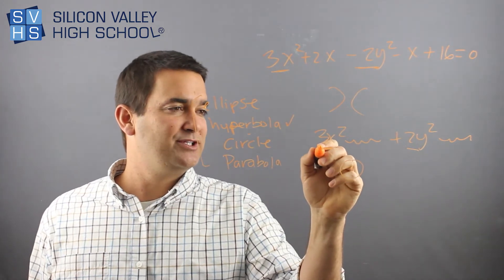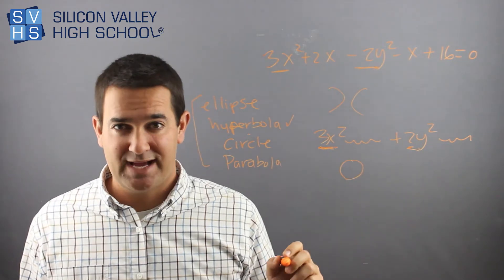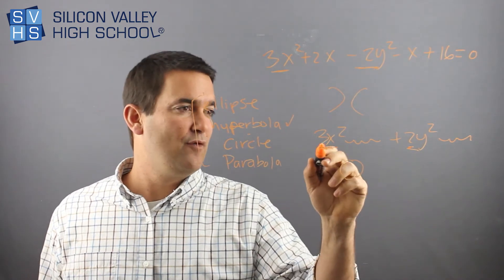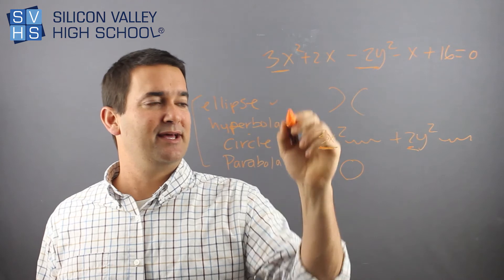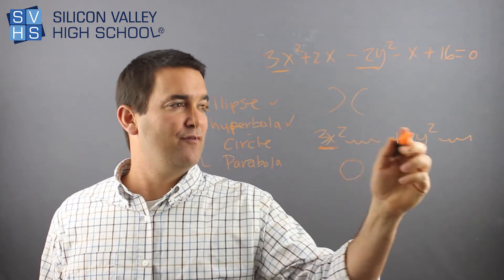Then the question is, are the coefficients the same for the x squared and the y squared? If the coefficients are different, it is an ellipse. It's an oval. If the coefficients are the same,